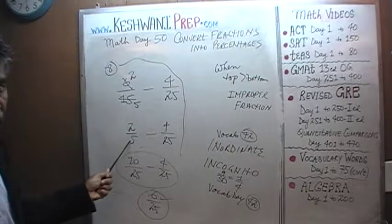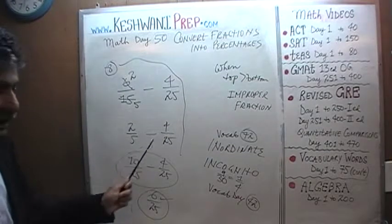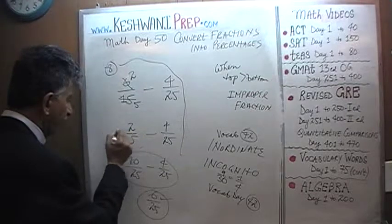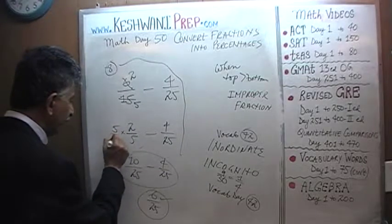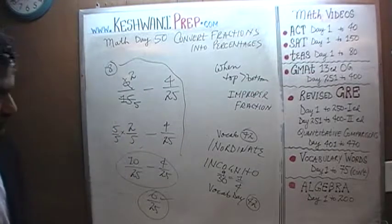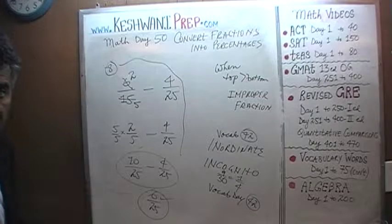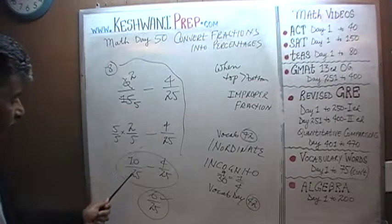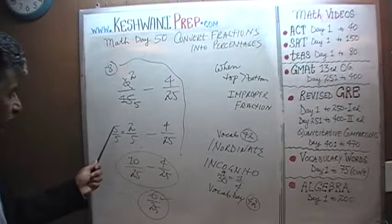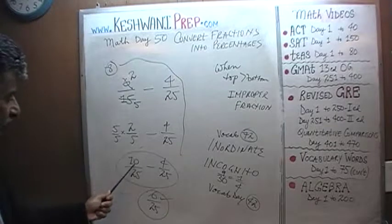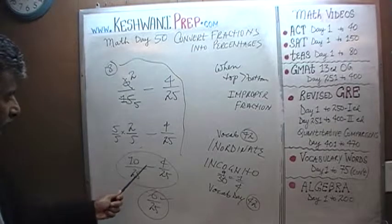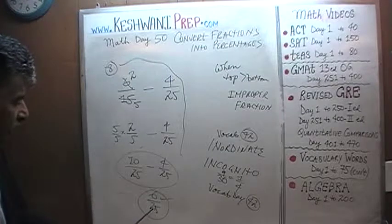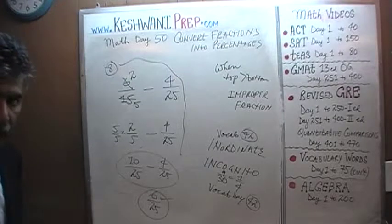How do we convert this 5 into a 25 so that we have the same denominator? It's very simple — multiply the first fraction by 5 over 5. Since 5 over 5 is 1, we are not changing its value. We end up with 5 times 5 which is 25 on the bottom, and 5 times 2 which is 10 on the top. 10 minus 4 over 25 is 6 over 25.